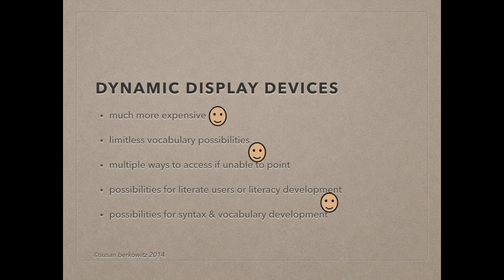Dynamic display devices are more expensive. Dedicated devices usually start at more than $4,000 or $5,000, although mobile devices and apps are now available at considerably less. They offer almost limitless vocabulary possibilities and multiple modes of access for people who can't use direct access with a finger. They offer possibilities for developing or using literacy skills and possibilities for syntax and vocabulary development, which are both important for young users.